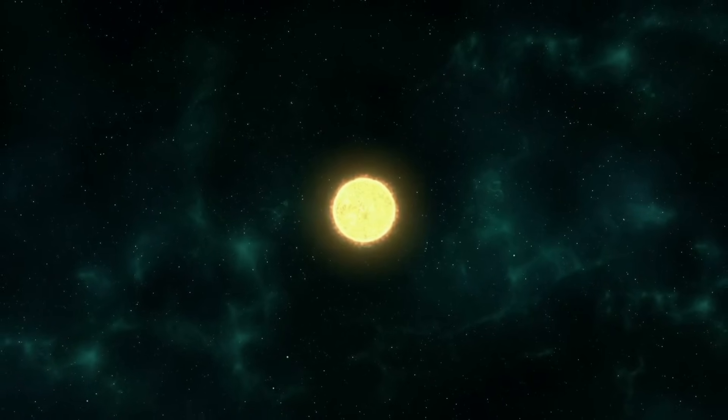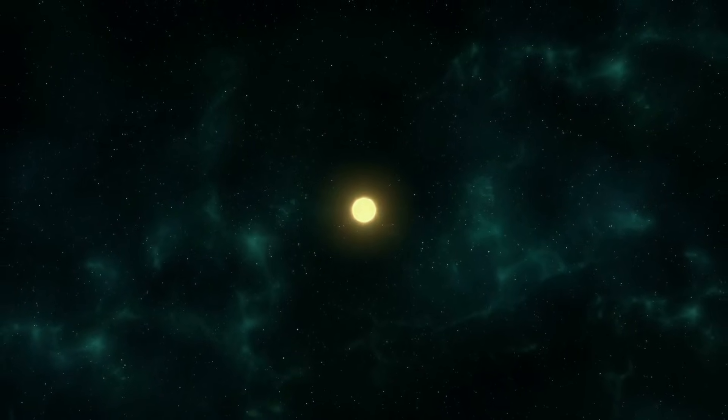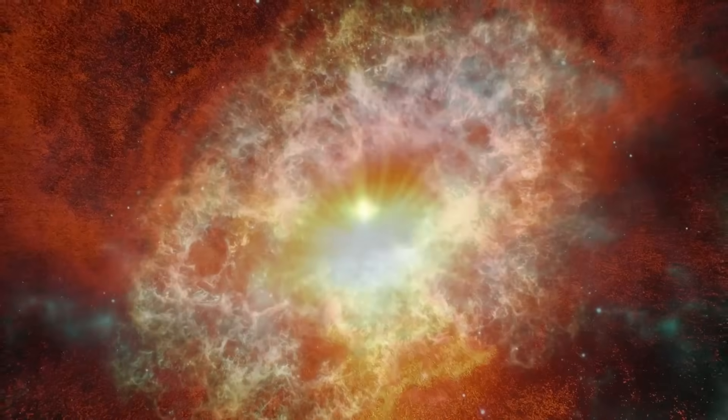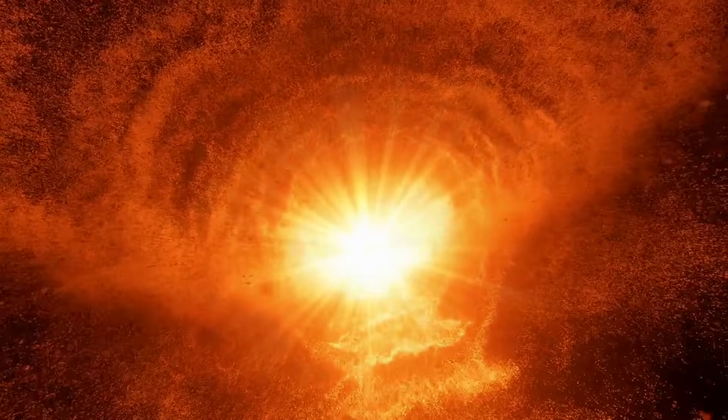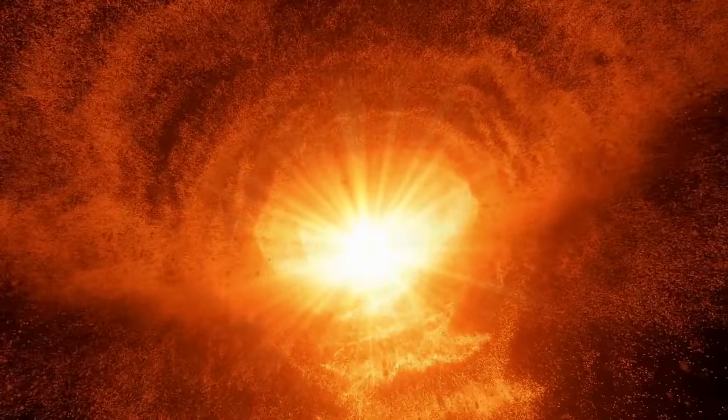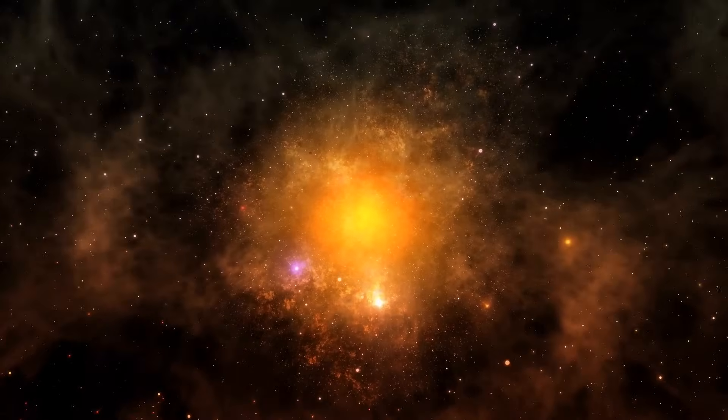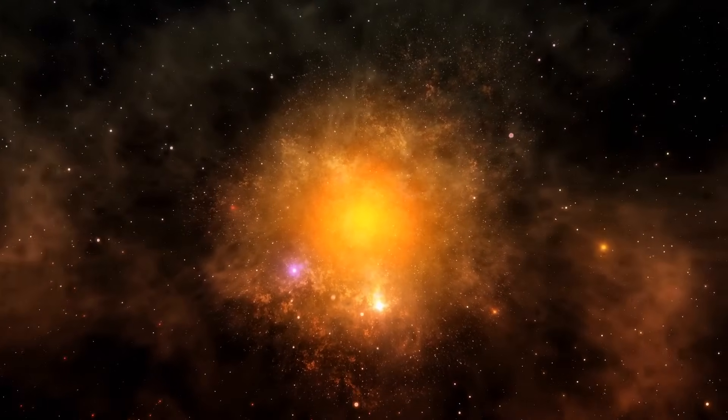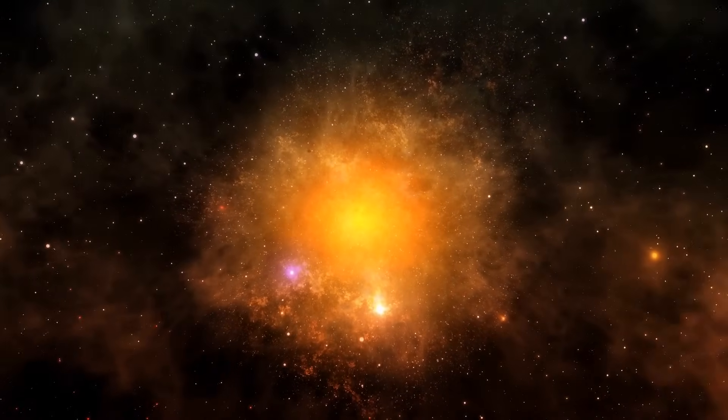The most common type of cataclysm is a core-collapse supernova, where a massive star's interior implodes, leading to a runaway fusion reaction and a tremendous explosion, where the energy emitted by the star can briefly shine billions of times brighter than a typical star.